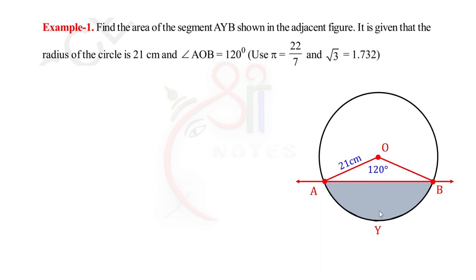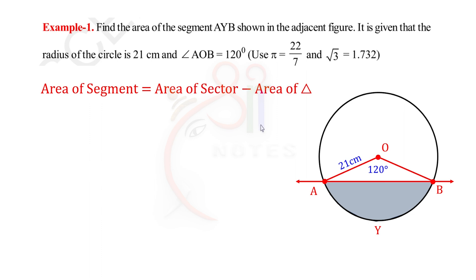Area of segment equals area of sector minus area of triangle. Triangle OAB and sector OAB are different. First, we find the sector area using the formula x by 360 degrees into pi r squared. The x value here is 120 degrees, which is the angle at the center.